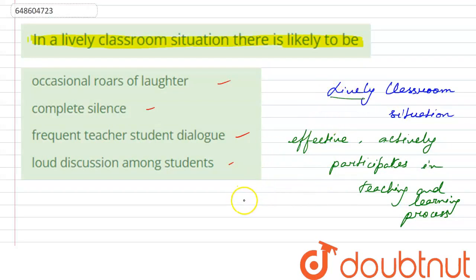So in a lively class, silence is not characteristic. There is no silence. Complete silence option is eliminated. So this option is gone.